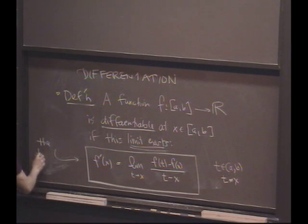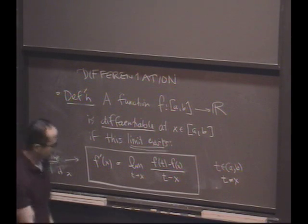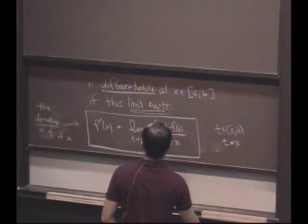So here's our definition of what's called the derivative. So this limit is called the derivative of f at x. And it's a function of x. So that's our first basic definition.